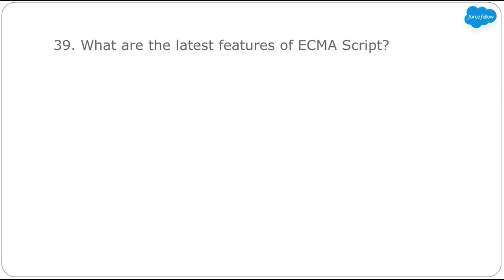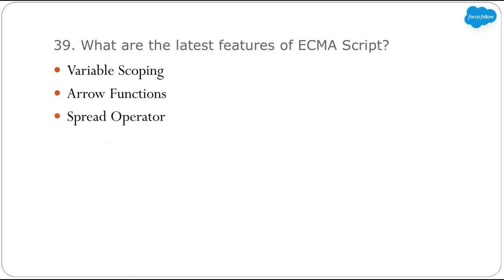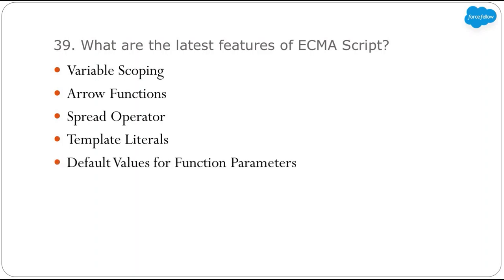Next: what are the latest features of ECMAScript? Let's discuss a few important ones. First, we have variable scoping, introduced in ES6 with two new keywords: let and const — we will discuss them in coming slides. We also have arrow functions, spread operator, template literals, default values for function parameters, classes, modules, and async/await. Many of these we will discuss in coming slides, though there are lots more features in recent releases.